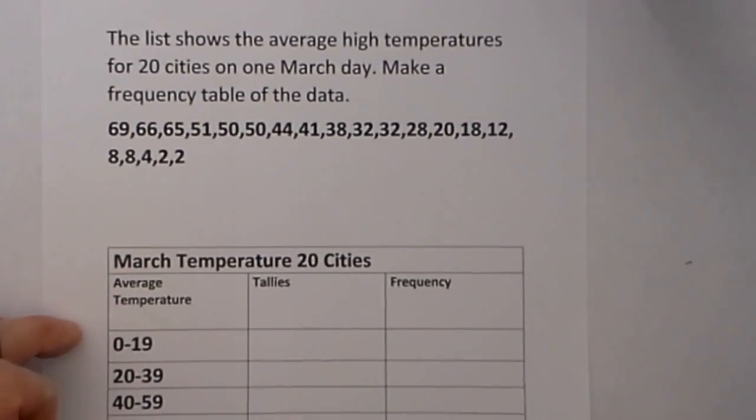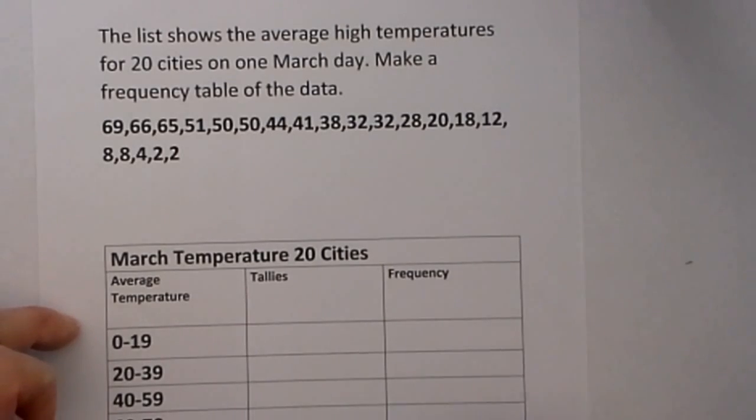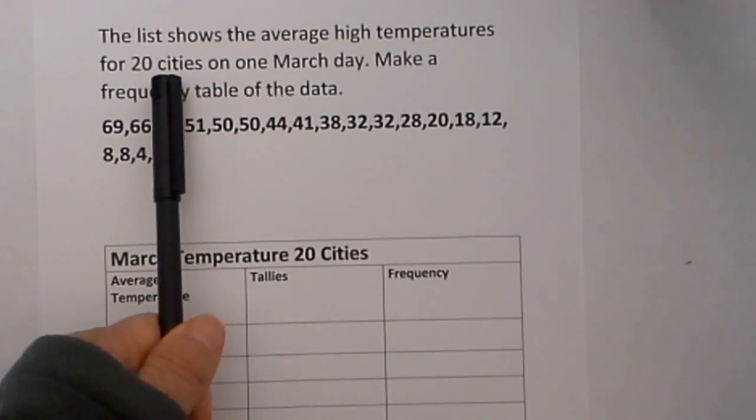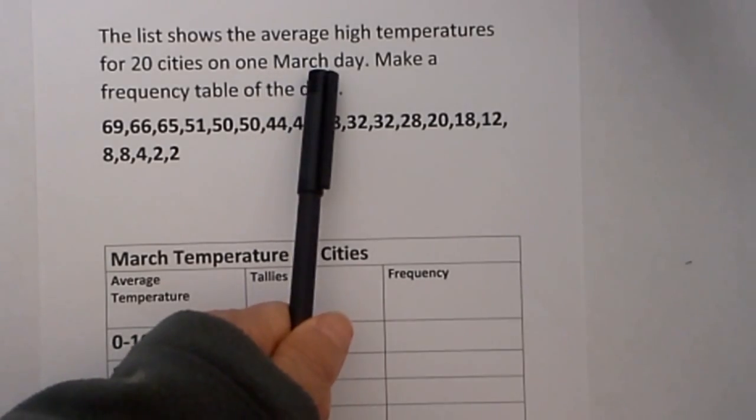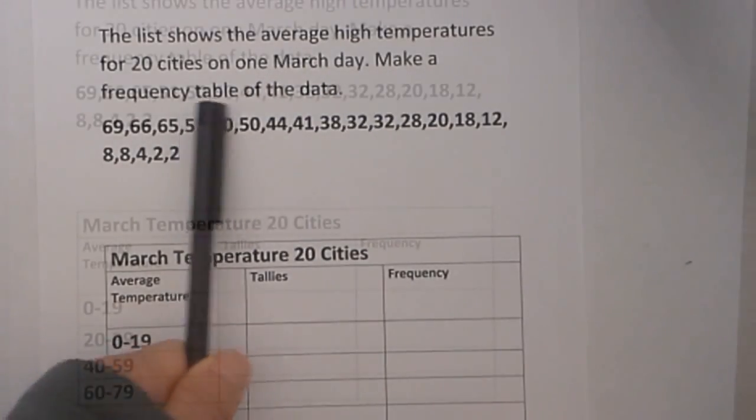Here is our prompt. The list shows the average high temperatures for 20 cities on one March day. Make a frequency table of the data.